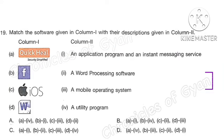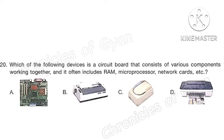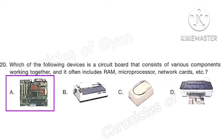Question 19. Match the software given in column 1 with the descriptions given in column 2. Correct answer is option A. Question 20. Which of the following devices is a circuit board that consists of various components working together and often includes RAM (random access memory), microprocessor, network cards, etc.? Correct answer is option A.